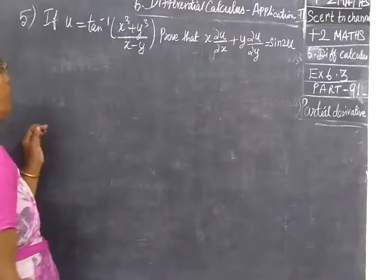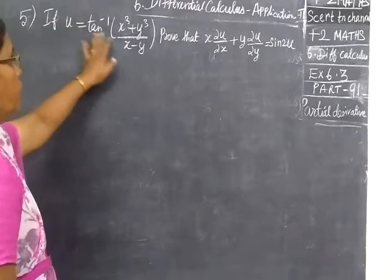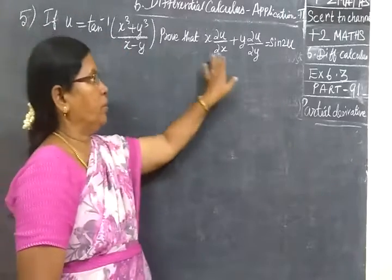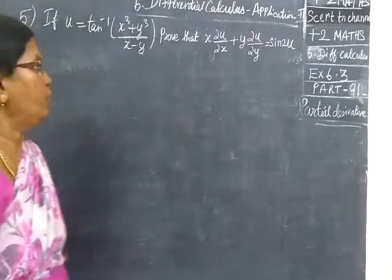Now we do part 91. If u equals tan inverse is given, prove Euler's theorem. This is the proof for it.